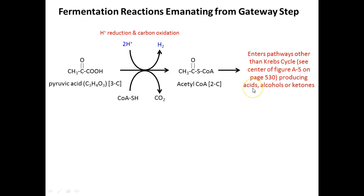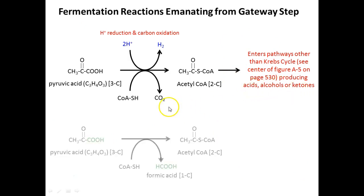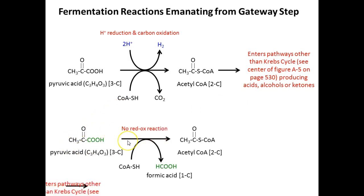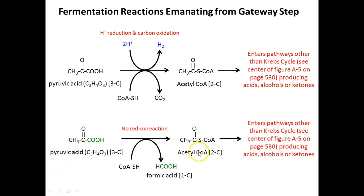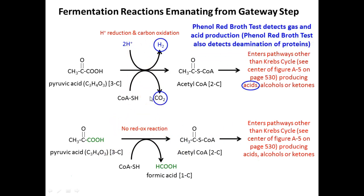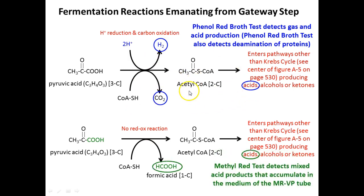The bottom line is that lots of times acids, alcohols, and ketones are produced. Here's another example of a different way of generating acetyl-CoA — in this case no redox reaction, no electrons exchanged. Carbon dioxide and hydrogen gas are very common products. For the methyl red test, that was just a pH test — and for a very low pH of 4.4 or lower, your organism has produced a lot of acid.